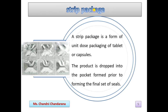A strip package is a form of unit dose packaging for tablets or capsules, where the product is dropped into the pocket prior to forming the final set of cells. It is formed by feeding two webs of heat-sealable flexible film through either heated crimping rollers or a heated reciprocating platen. The sealing is usually accomplished between pressure rollers, achieving a high degree of seal integrity.